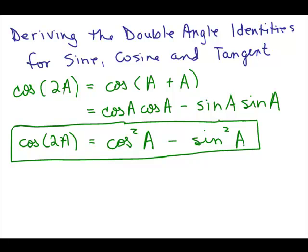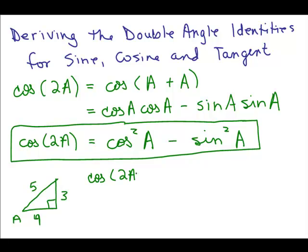Let's look at an example. Let's say we have a right triangle — a 3, 4, 5 triangle with angle A. I can see what the cosine and sine of A are. If this is A, then 2A would be two of these angles next to each other. So how would we figure out the cosine of 2A for this angle A? I can use the formula cosine squared A minus sine squared A.